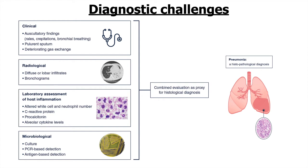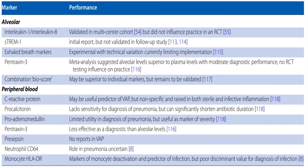For laboratory assessment, we rely on total lymphocyte count, neutrophil numbers, C-reactive protein, procalcitonin, and alveolar cytokine levels, but none of these have been definitively evaluated to indicate pneumonia versus infection at another site. Microbiologically, we rely on cultures, PCR-based detection, and antigen-based detection, though the appropriate sample collection method and timing are not yet established. Alveolar and peripheral blood biomarkers also still have uncertain utility for bedside diagnosis of VAP in ARDS.